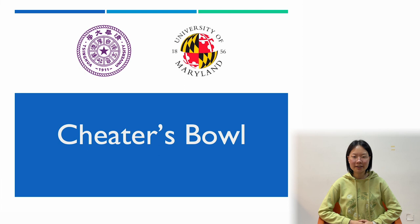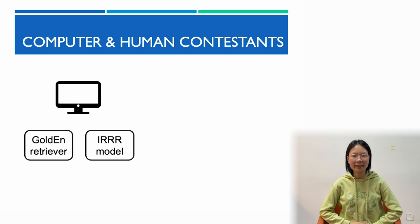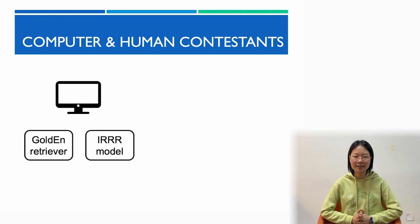The questions we hope to answer in this talk are: A. How do computers and human strategies differ? And B. Who is better? Let's meet our computer contestants. We have two models that find the answer by creating text-based queries. We select the state-of-the-art multi-hop QA models, the Golden Retriever and the IRRR model. Our human contestants were trivia contestants recruited from an online quiz bowl tournament.